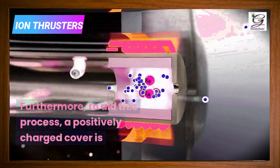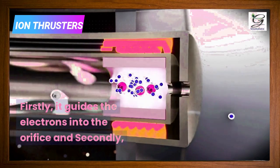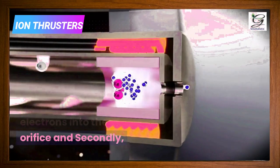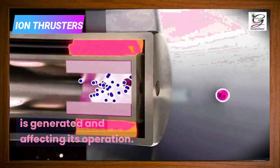Furthermore, to aid this process, a positively charged cover is added, which has a dual function. Firstly, it guides the electrons into the orifice, and secondly, it prevents other particles from entering the section where the plasma is generated and affecting its operation.